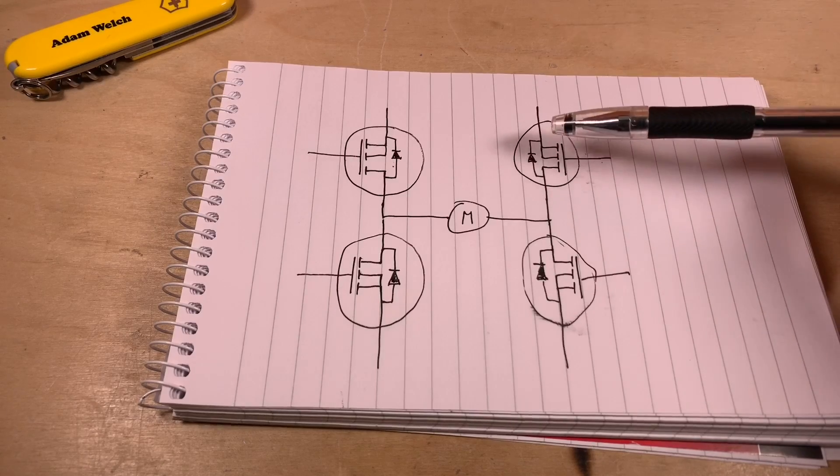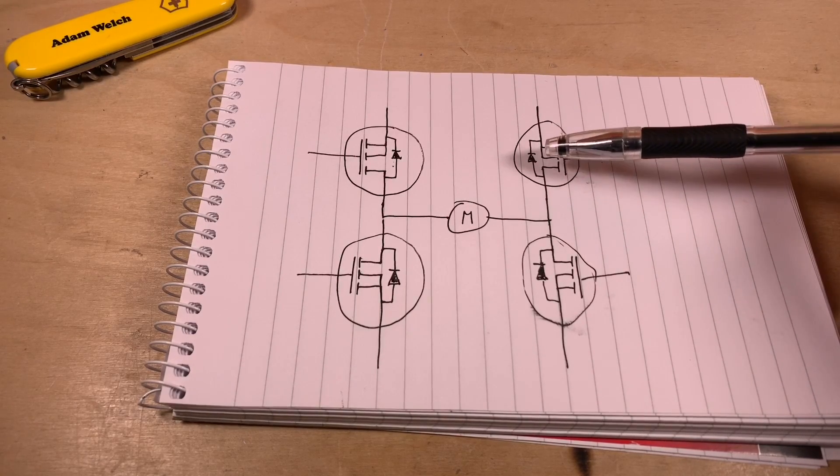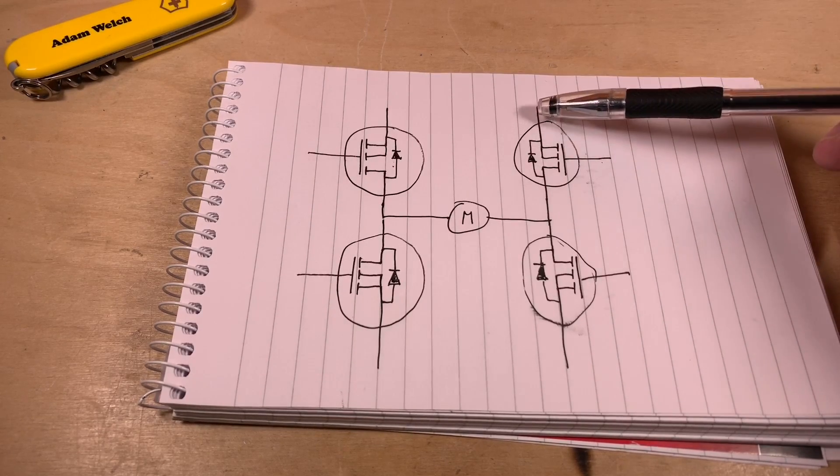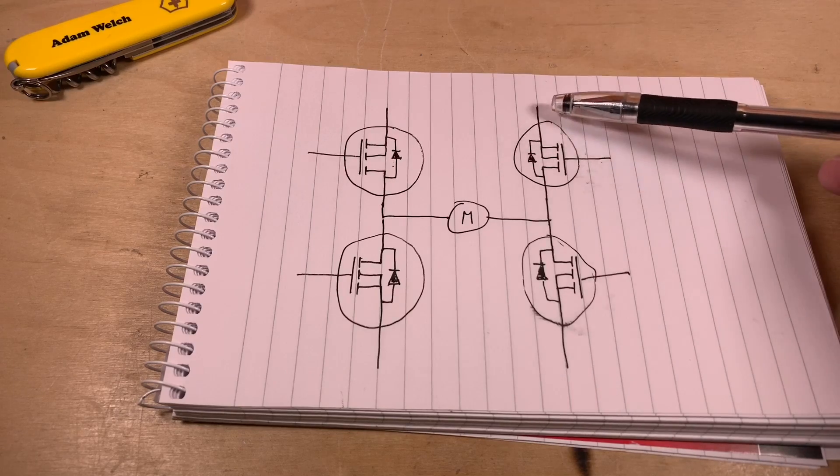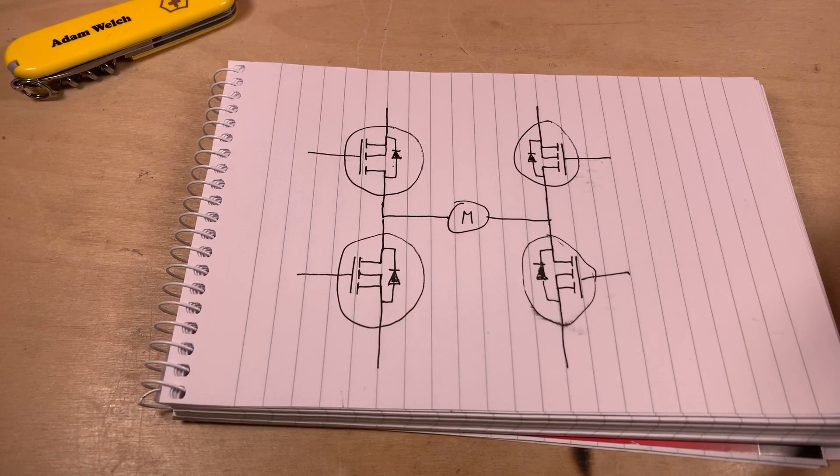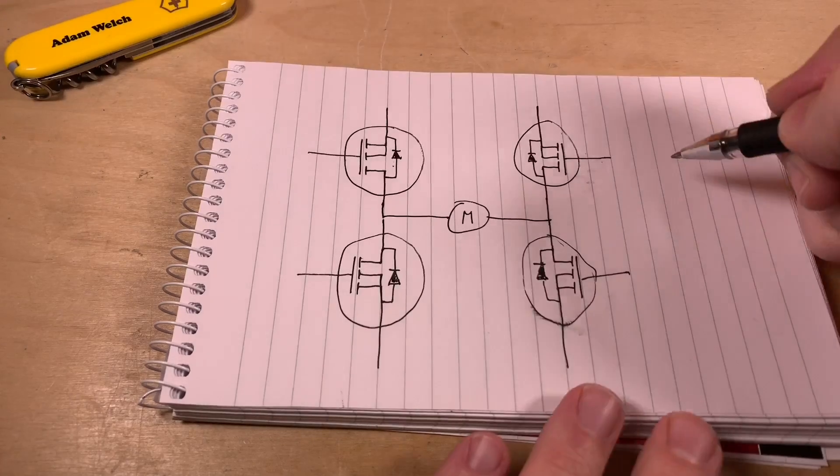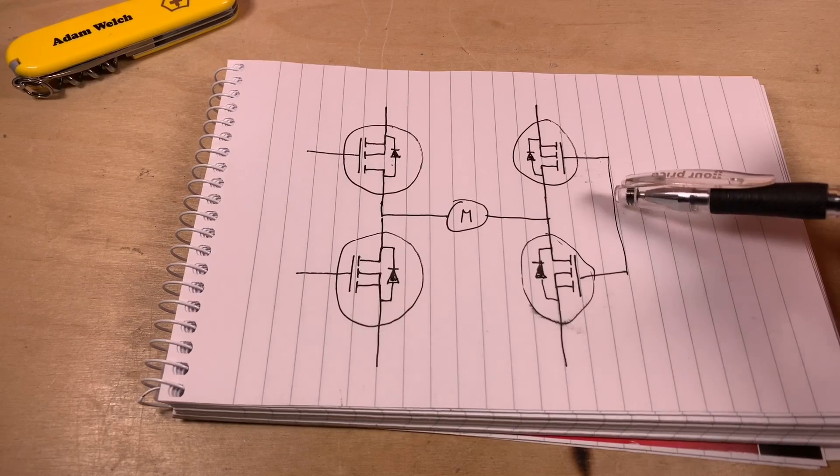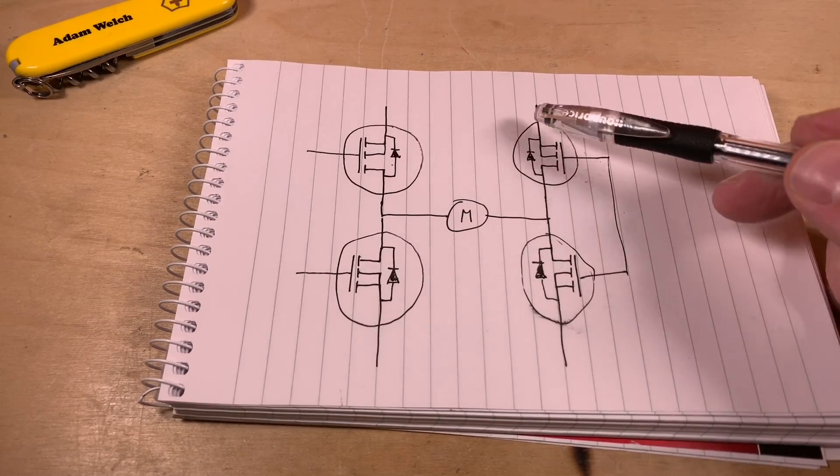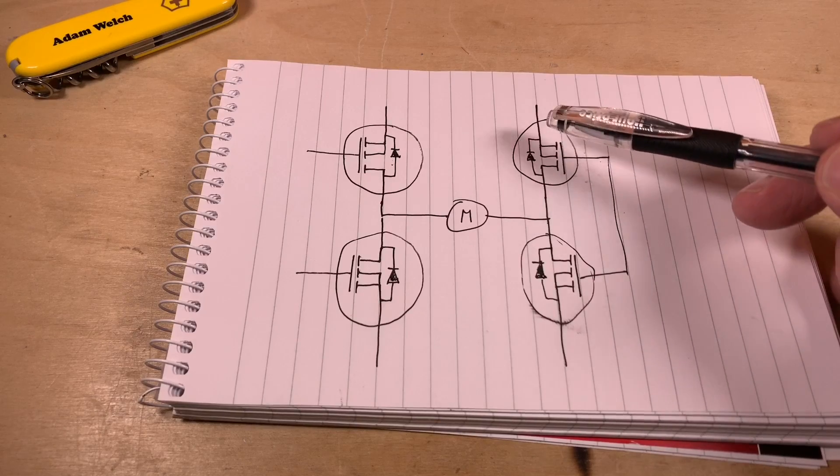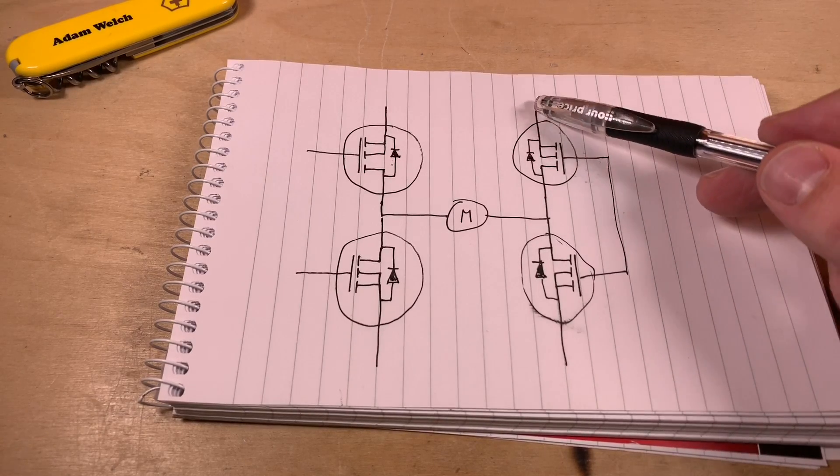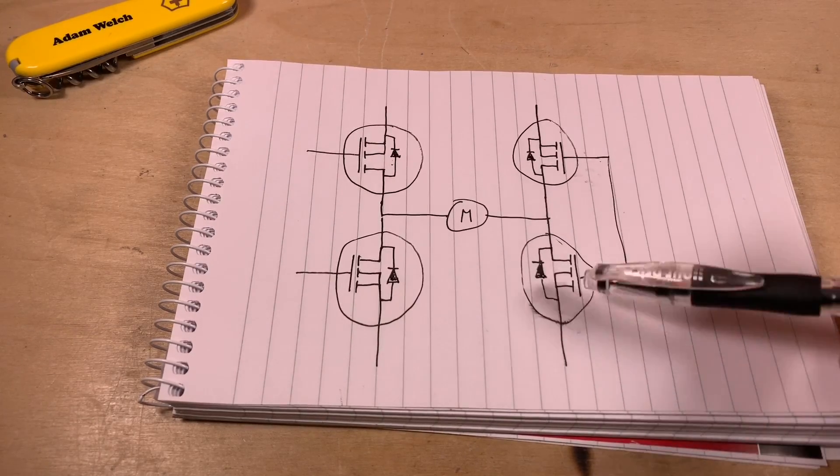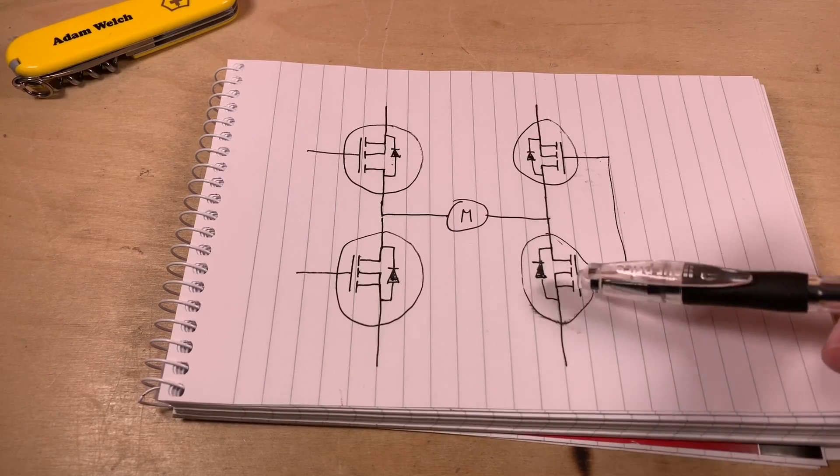In addition to that, I want to make sure that I can't possibly turn on this P-channel MOSFET and this N-channel MOSFET at the same time, because I'm obviously going to create a direct short from 12 volts to ground, and that would be a bad idea. So, how about I connect the two gates together? Now, with the gates tied together, if this point here is connected to ground, that will turn the P-channel MOSFET on, because the gate voltage is lower than the source voltage, and this N-channel MOSFET will most definitely be off, because the source and the gate will be at the same potential.